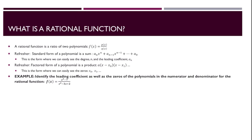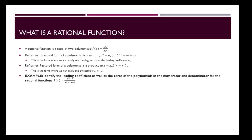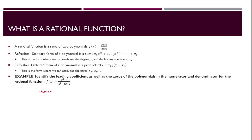For our first example, let's identify the leading coefficient as well as the zeros of the polynomial in the numerator and denominator for the rational function x squared minus 7 over x squared minus 3x plus 2.